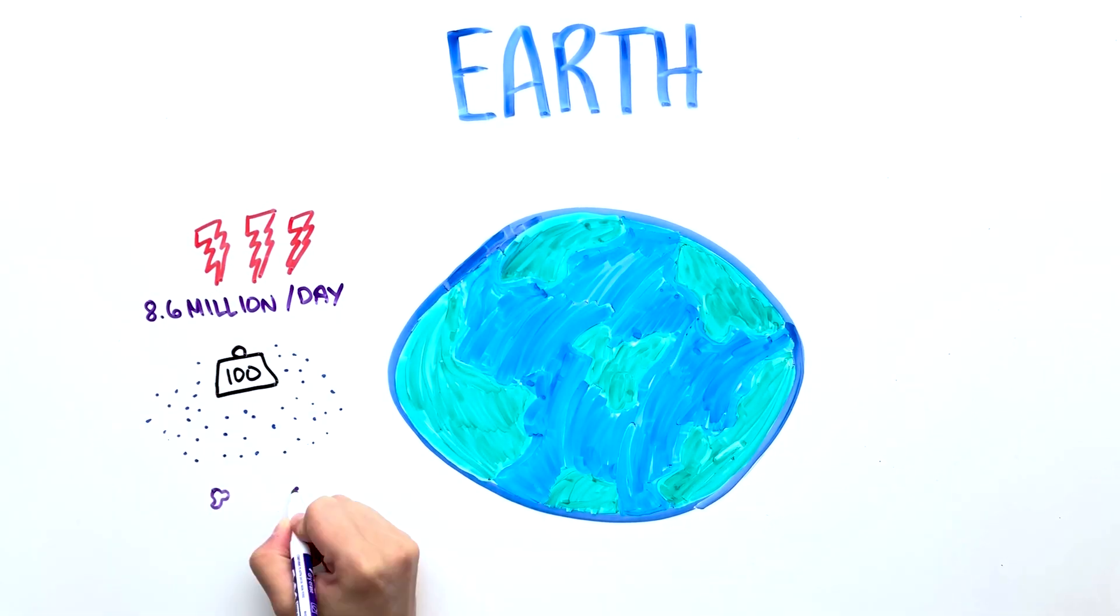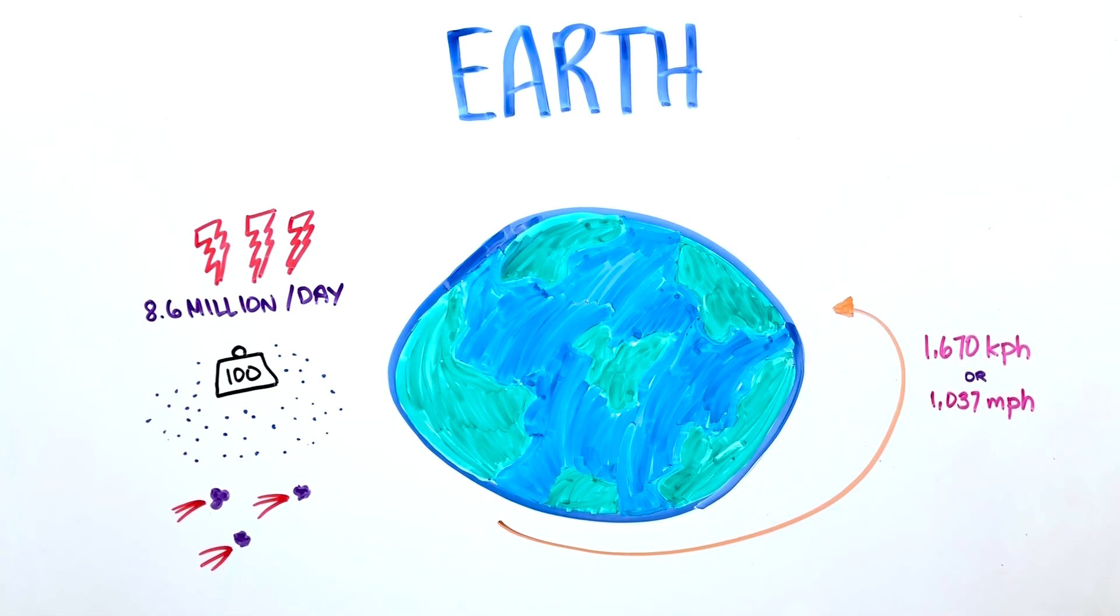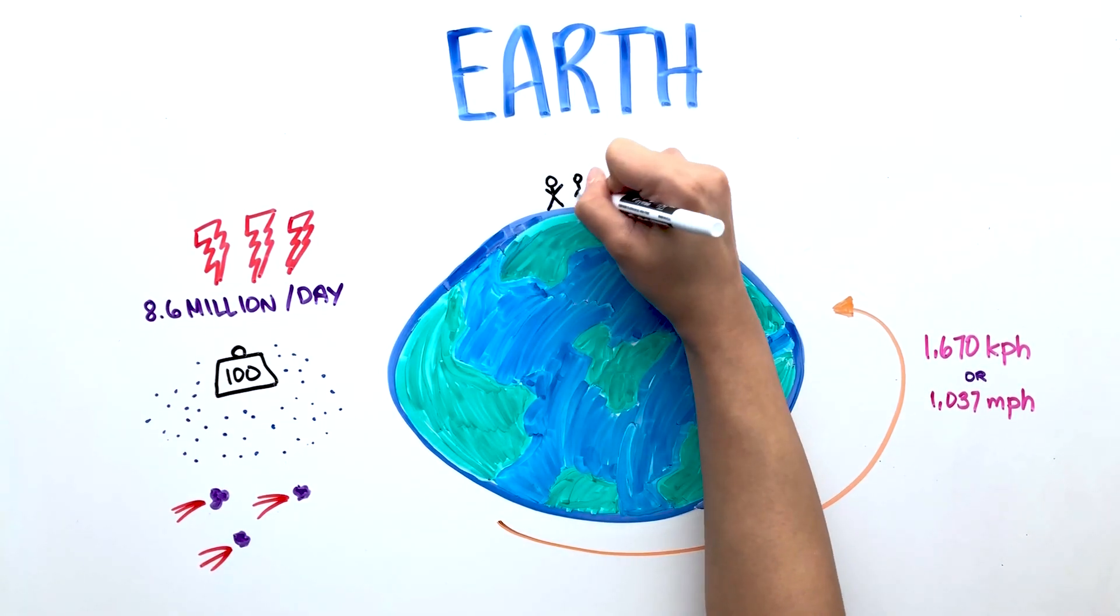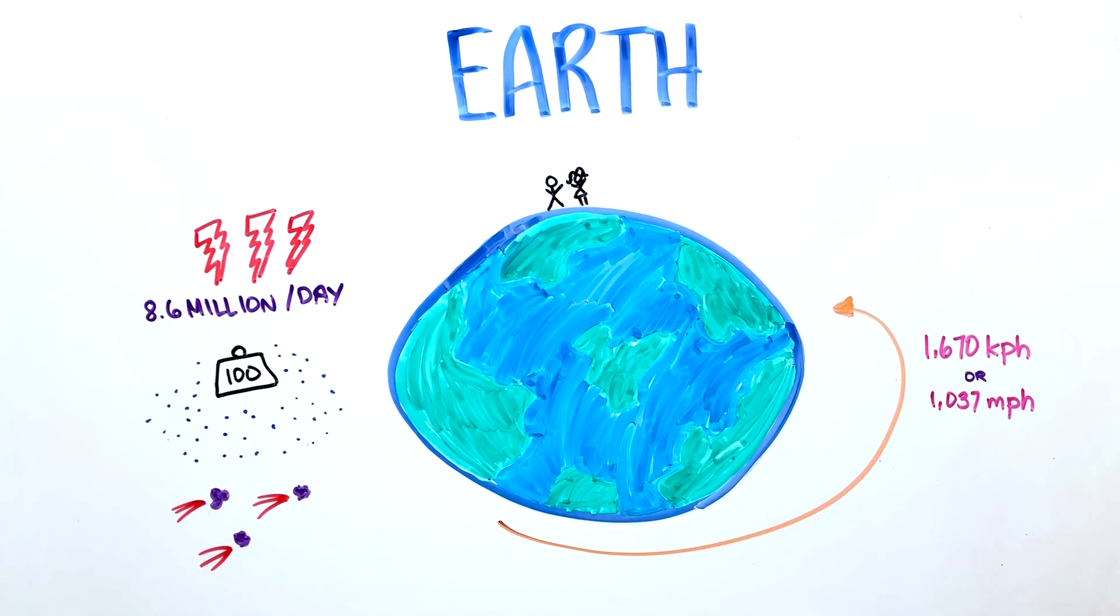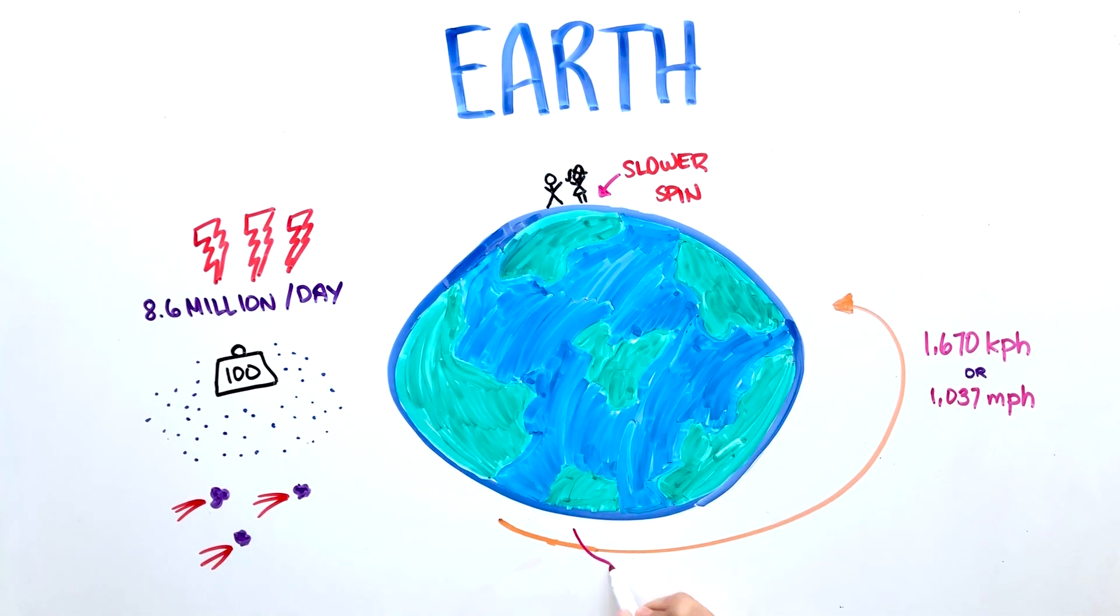Its tectonic plates move as fast as a person's fingernails grow, and we spin at about 1,670 kilometers per hour. That's if we were standing on the equator. The further north or south we travel from the equator, the slower we spin. Kind of like spinning a basketball on your finger. The middle part or its equator spins faster than the rest.